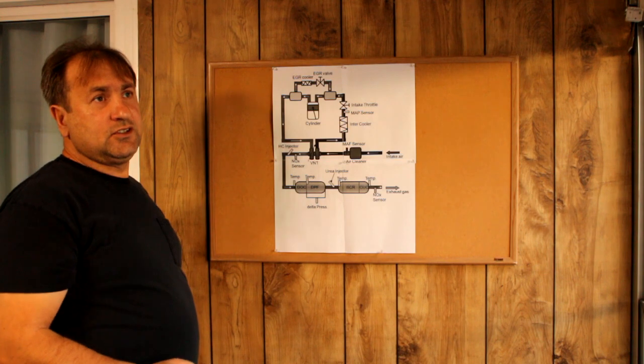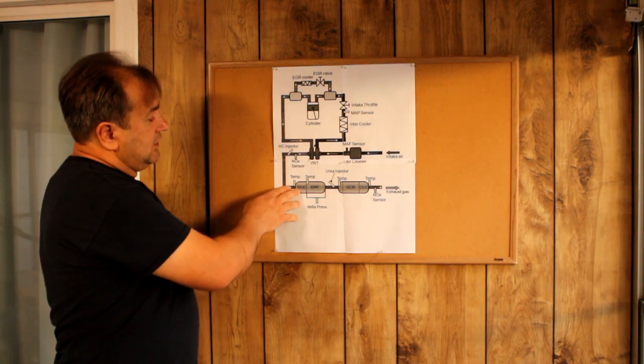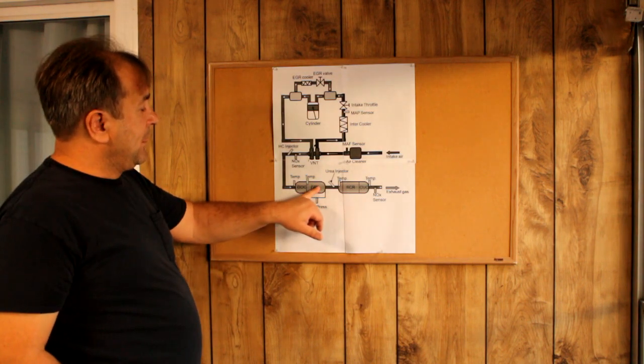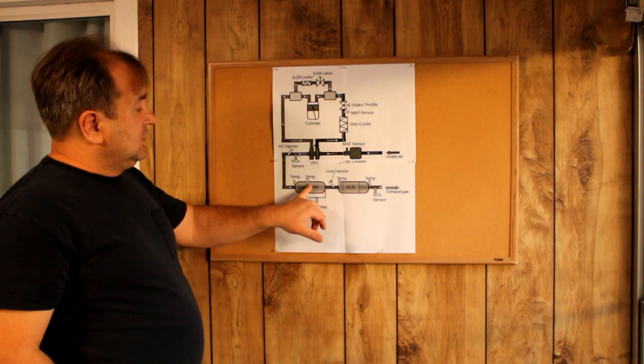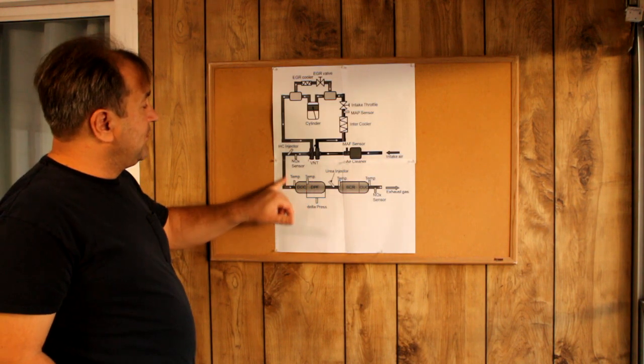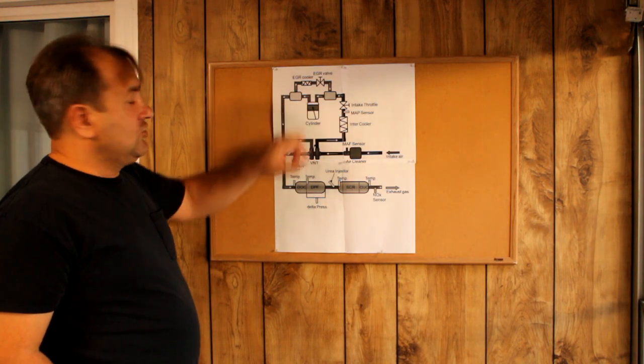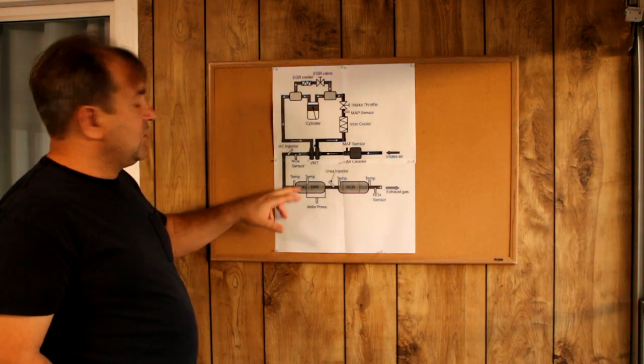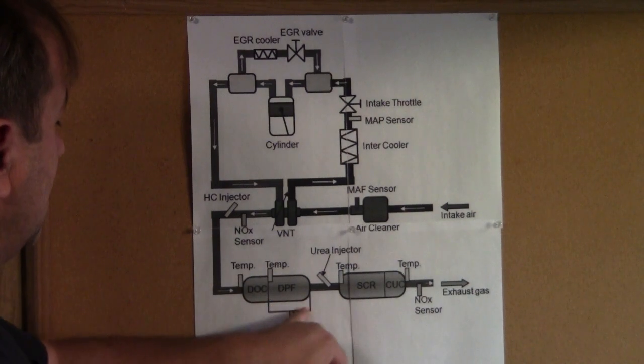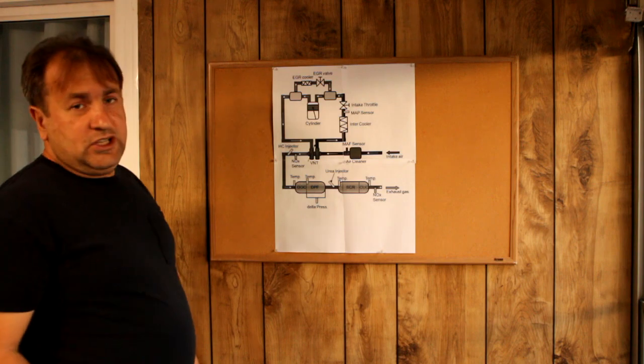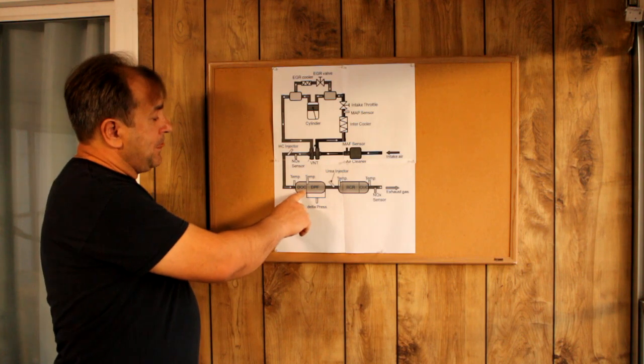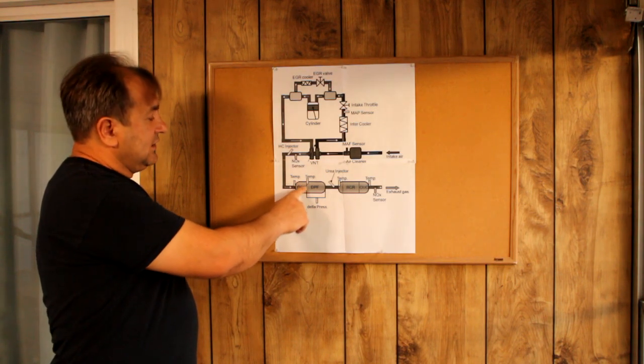How does the DPF work? When exhaust gas comes here, it goes to the filter. This is a very fine filter, like one micron. This filter collects the soot inside. When the soot builds up inside, it stops flow and back pressure goes to the engine. We have a sensor which measures the back pressure - this is the delta pressure sensor, the differential pressure sensor.